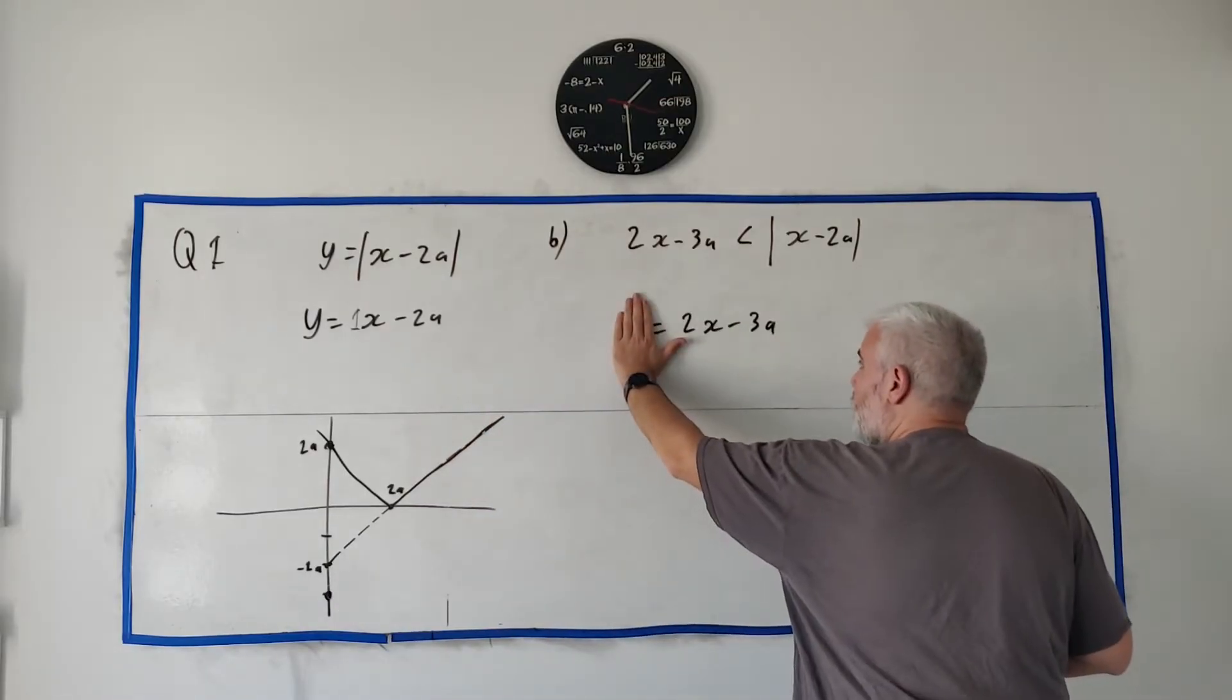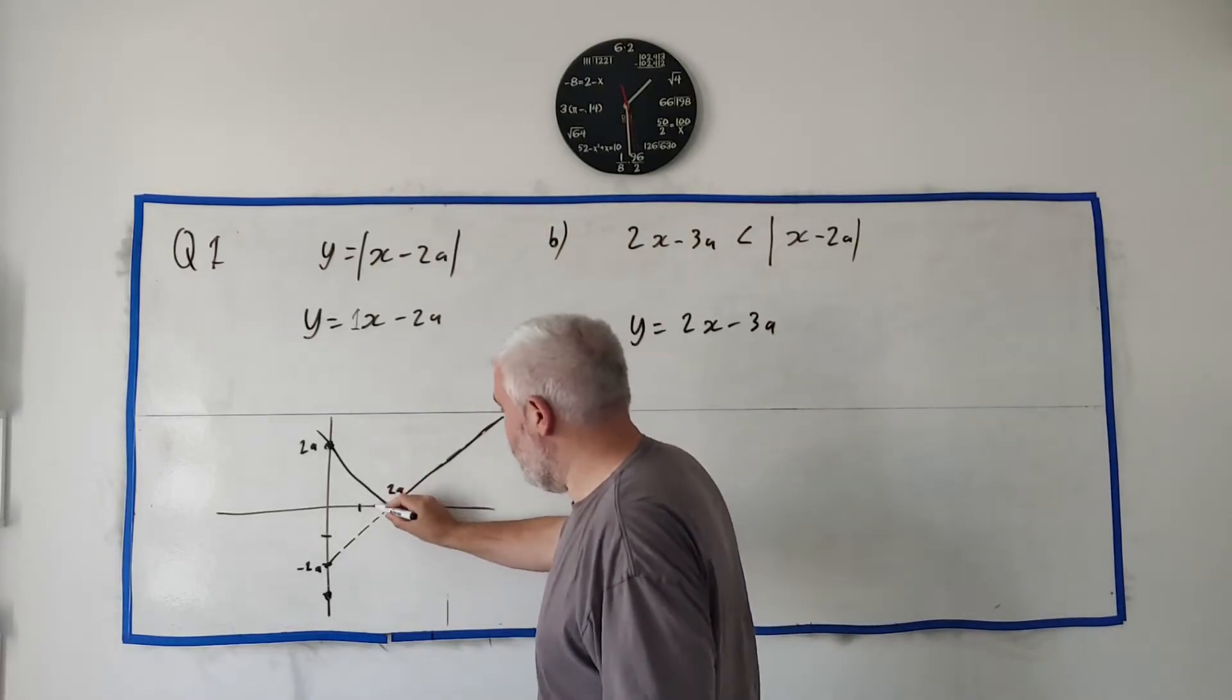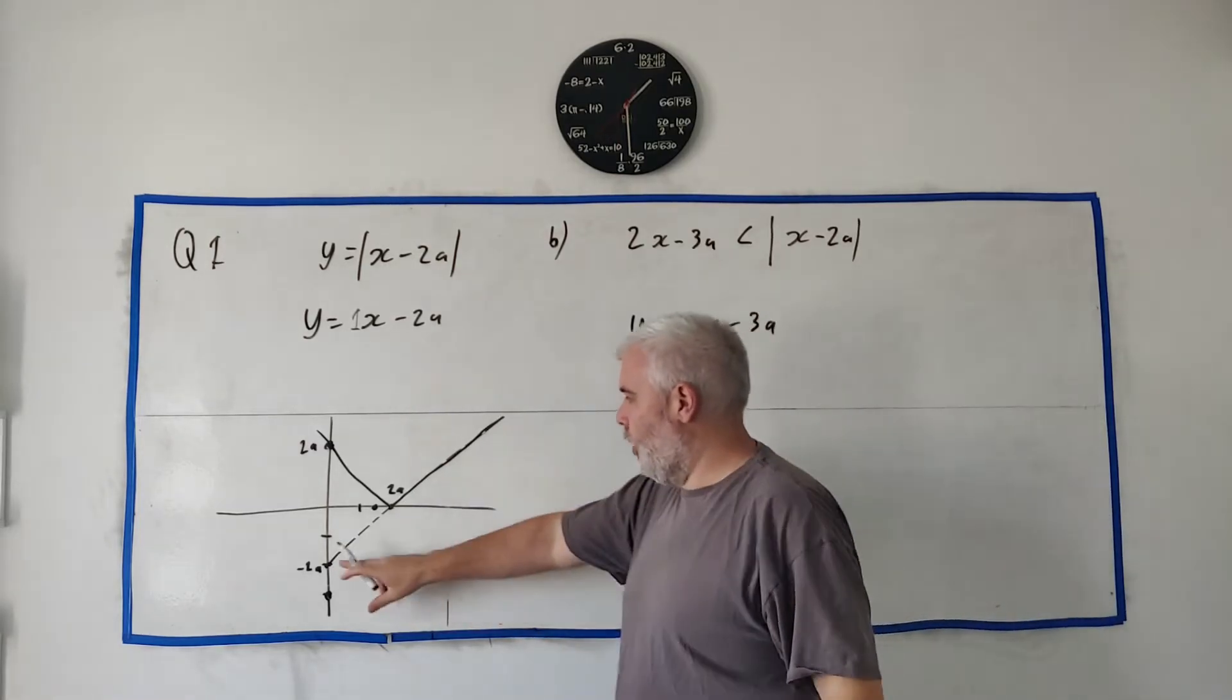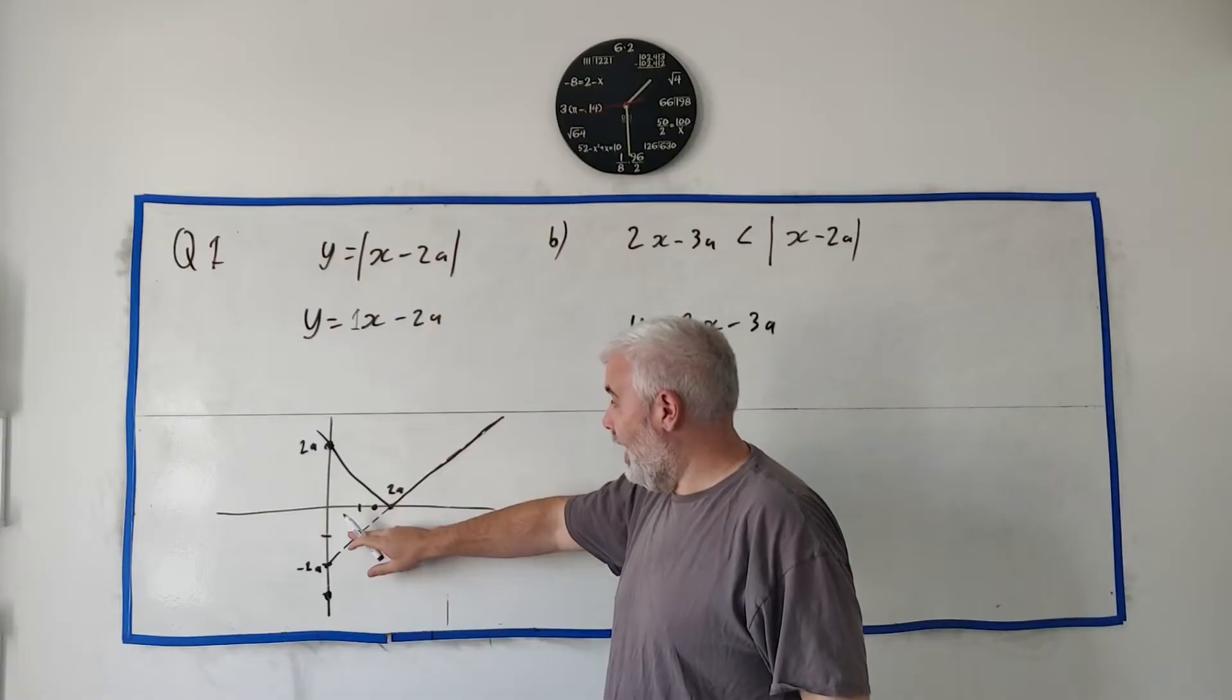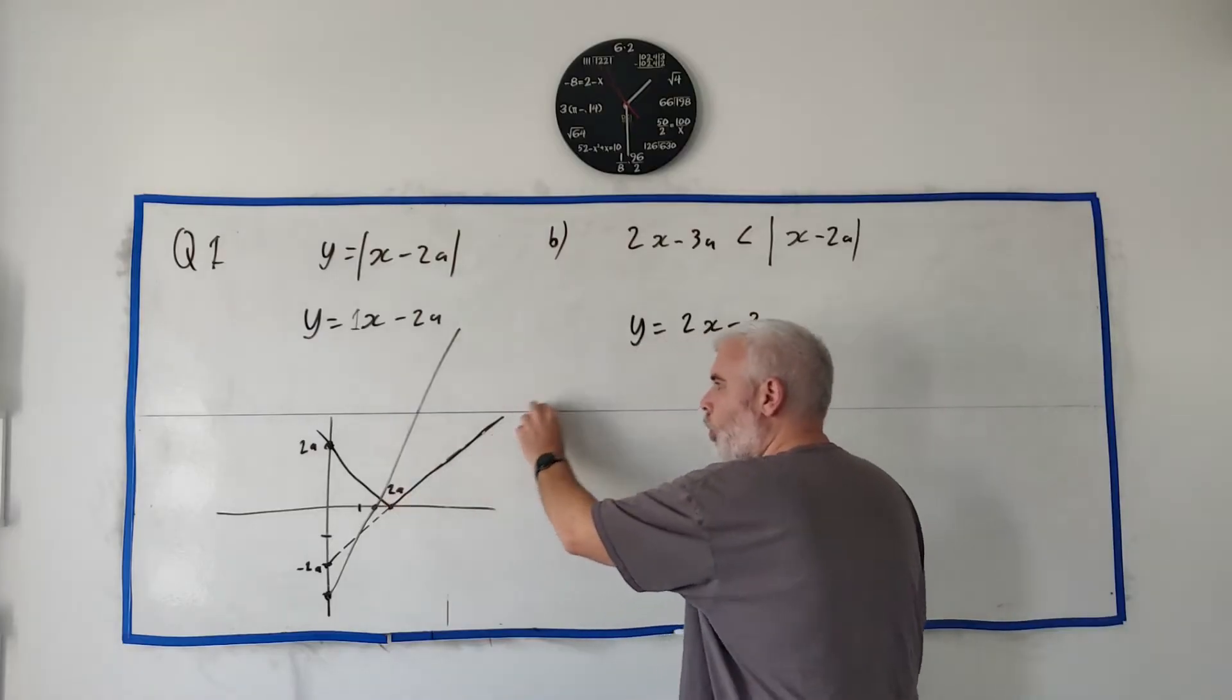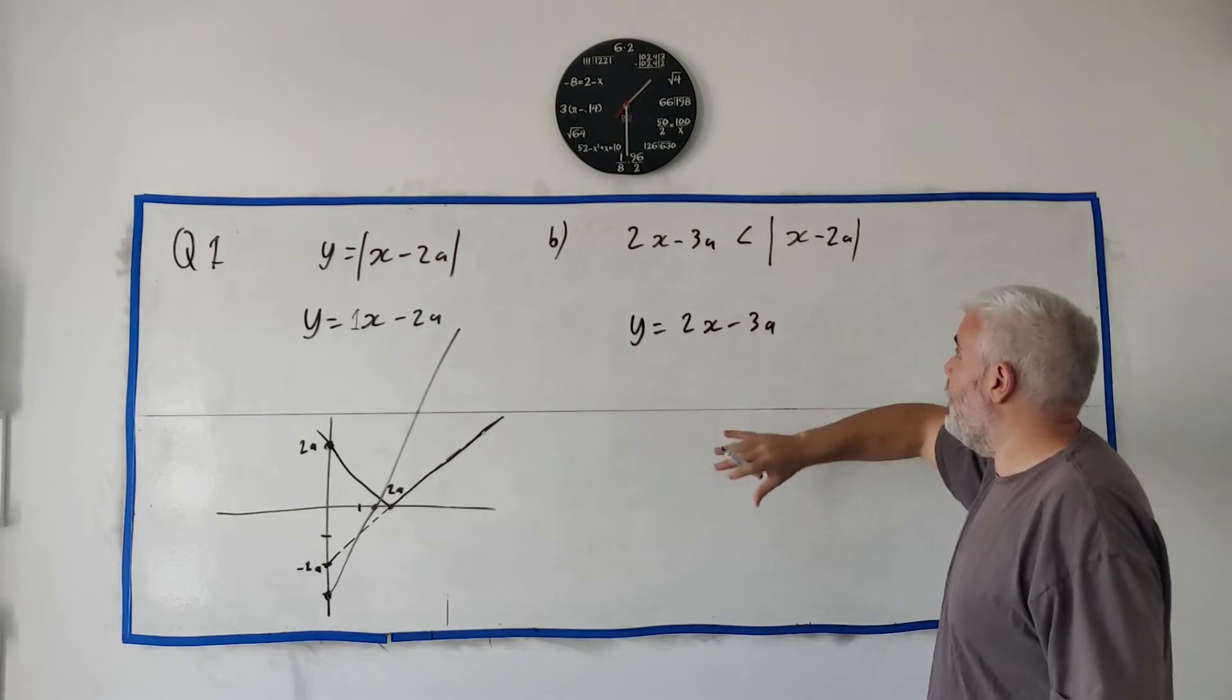When y is 0, we could rearrange this. 3a would come over, divide by 2, x would equal 3 over 2. So that's 1a, that's 2a. 3 over 2a is 1 and a half a's. So it would hit somewhere like that. Another way to think of that is, that's the y-intercept and the slope is 2. Every time we come 1x, it would go up 2. Sorry, from down here. 1x goes up 2. Half an x goes up 1. And we get to this point there. Drawing this in looks something like that. Now a few important things to know here. This is a slope 1. This is a slope 2. So these will never meet. They diverge.